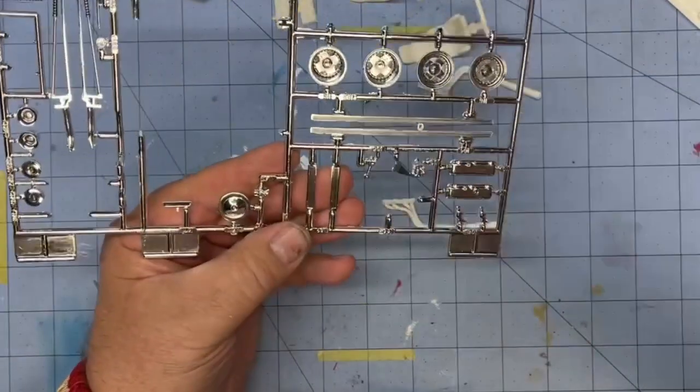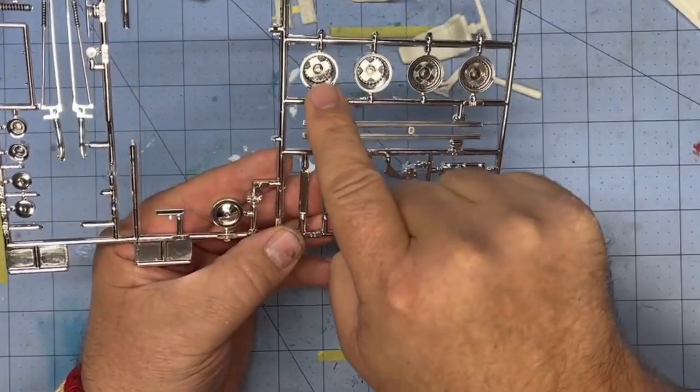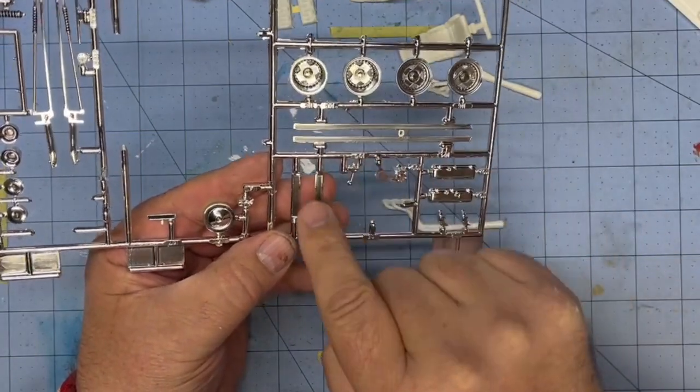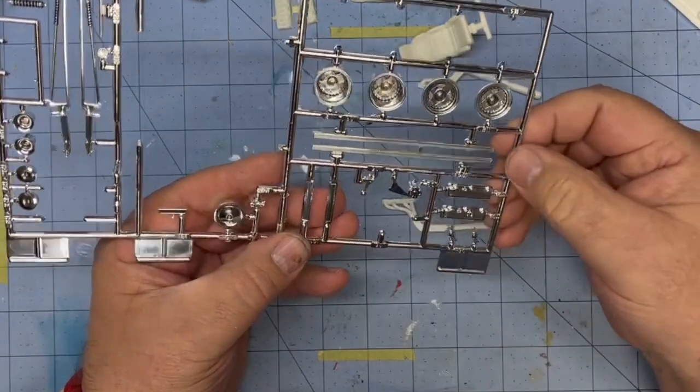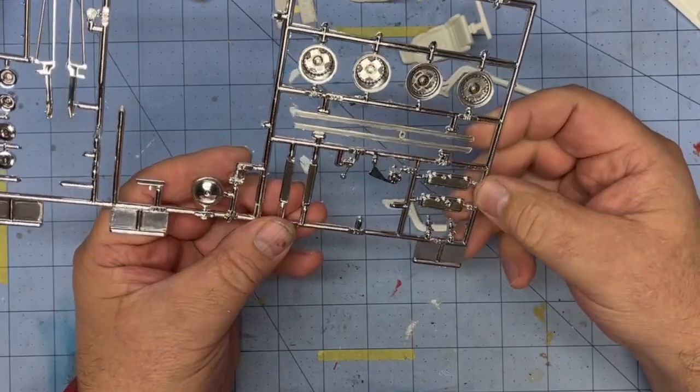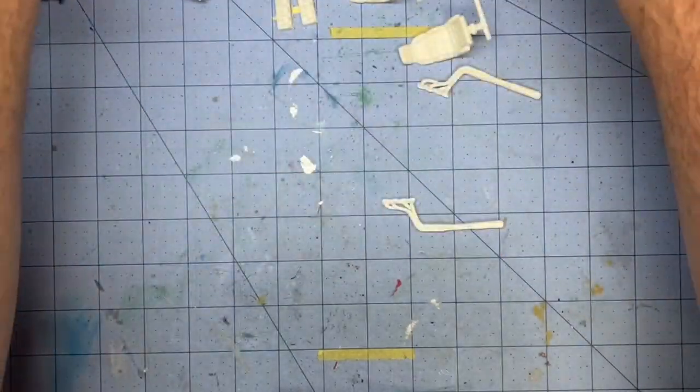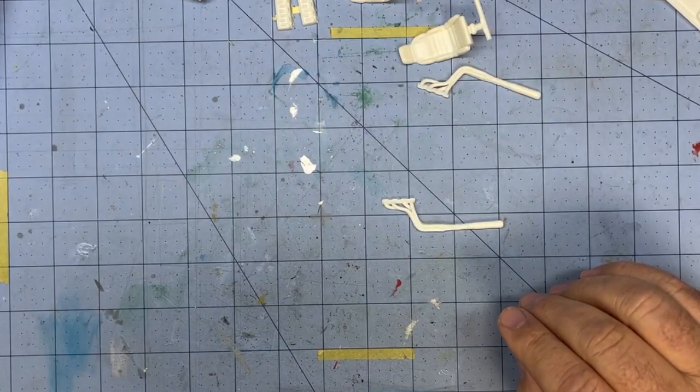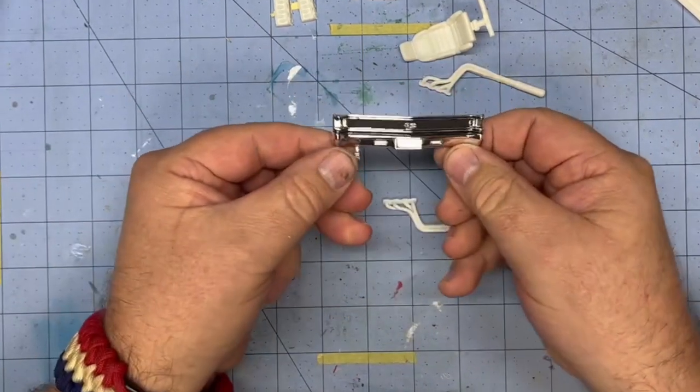So the last thing I did was a quick pin wash on my rims and my chrome trim just to give it a little bit of highlight. I also did the bumpers and I'm happy with the bumpers. Check this out.